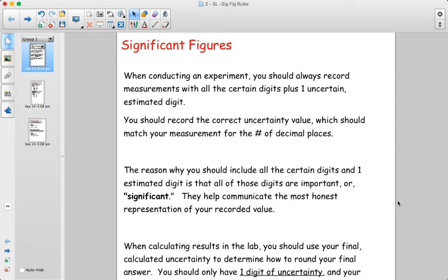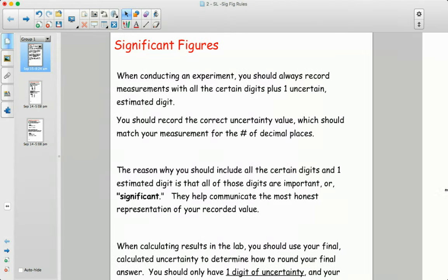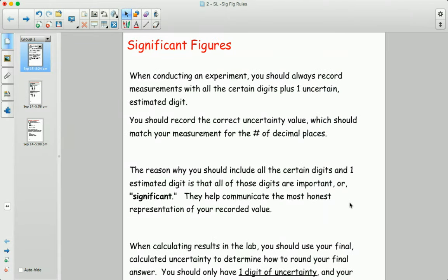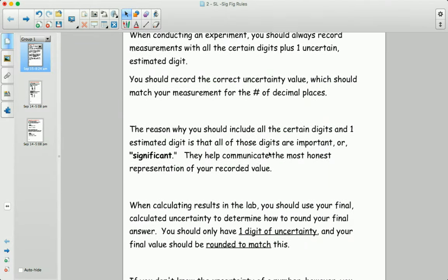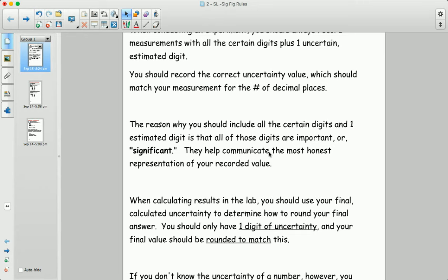Significant figures. When we conduct experiments in chemistry class, we're going to use the uncertainty rules that we've talked about to figure out where to round off numbers and how to report numbers with the correct number of decimal places. All the rules that we've covered in the previous video and in class, that's what you should be following for lab reports.